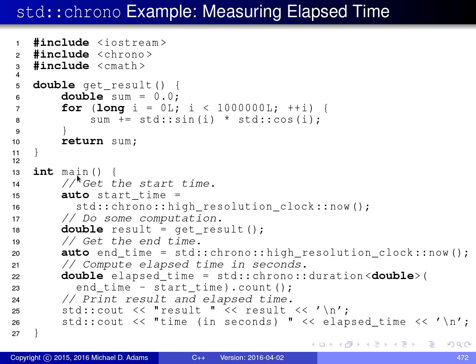So in the main function below, what we're going to do is get the current time, then call the function get_result, and then get the current time again, and take the difference between these two times to find out how much time get_result took to execute.